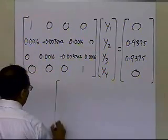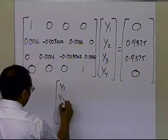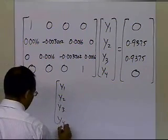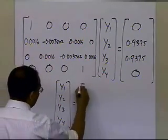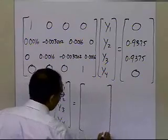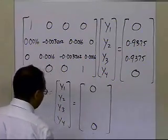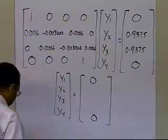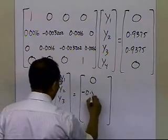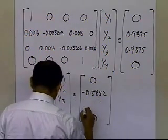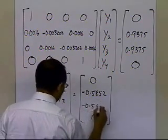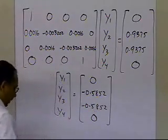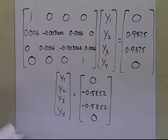The solution turns out to be: y1 equals 0, the last one y4 equals 0, because those are the boundary conditions. And y2 and y3 both turn out to be minus 0.5852. These are the deflections at node 2 and node 3.